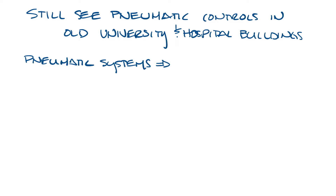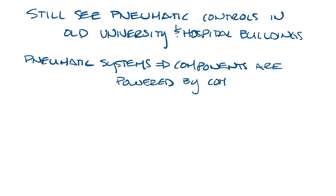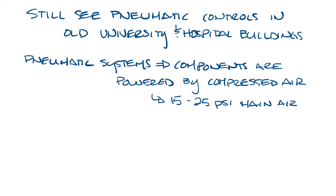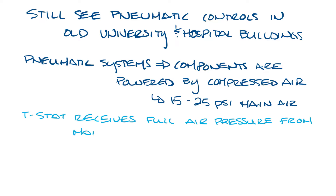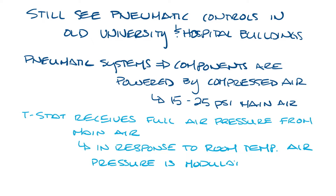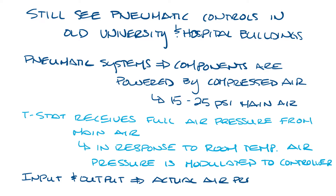In a pneumatic system, the components are powered by compressed air, usually 15 to 25 psi, from a main air system. The thermostat receives full air pressure from the main air supply. In response to room temperature, this air pressure is modulated to the controller, which controls the damper position. So when I talk about input or output relative to pneumatic controls, I'm talking about an actual air pressure signal.